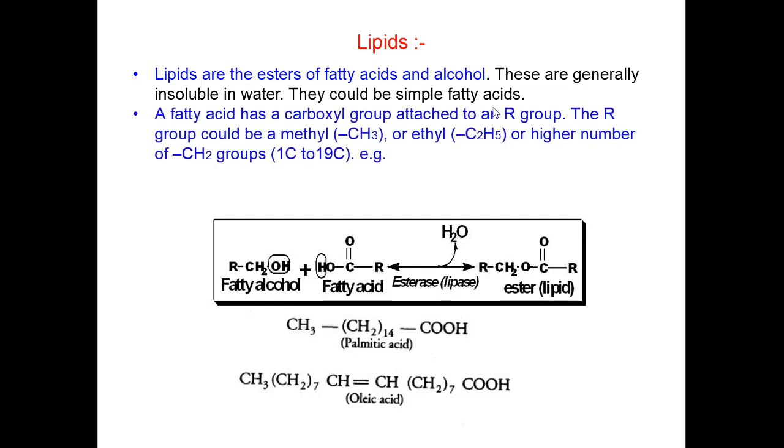What is a fatty acid? A fatty acid has a carboxyl group attached to an R group. You can understand here with this fatty acid here. This is carboxyl group attached to the R here. The R group may be a methyl, ethyl or higher number of CH2 groups. It may vary from one carbon to 19 carbon chain.